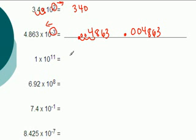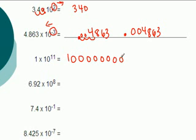1 times 10 to the 11th means we start with 1 and move the decimal 11 spaces to the right, filling in zeros. That number becomes 100,000,000,000.